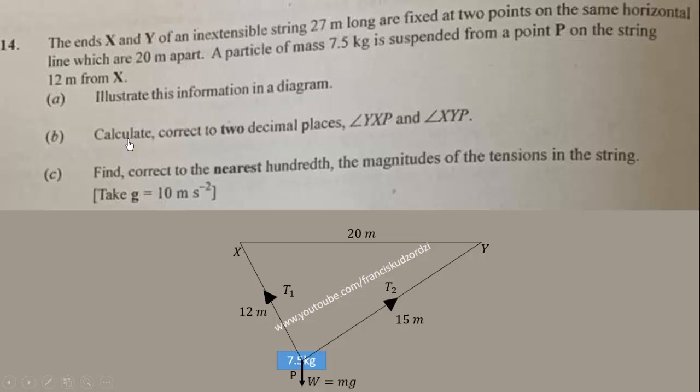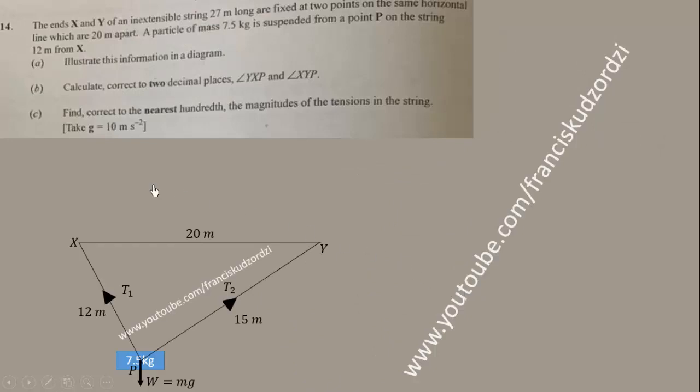We have managed to illustrate this information in a diagram. The next thing is to calculate correct to two decimal places angle YXP and angle XYP. We can do that by using the cosine rule together with the sine rule. The cosine rule is given by a² = b² + c² - 2bc cos A.